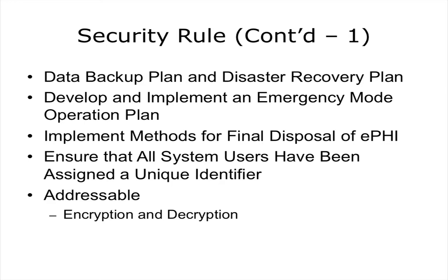Under the Security Rule, you must ensure that all system users have been assigned a unique identifier. There should be no joint identifier for all people working in the emergency room or intensive care unit. Each user on a given system must have a unique identifier so that audit logs can be created and it is known who accessed which information and where. Finally, under the Security Rule, there is the addressable item of encryption and decryption of protected health information, which is not always required but can help prevent breaches.